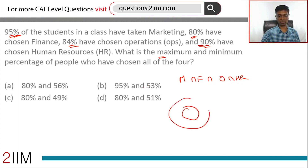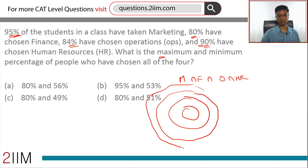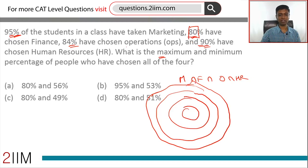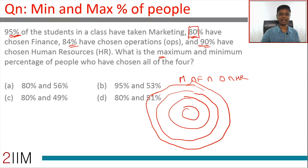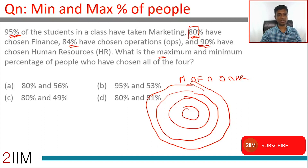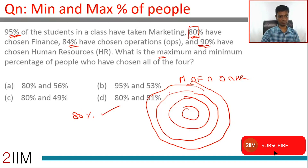If the smallest set is a subset of the slightly bigger one, which is a subset of the one bigger than that, and so on — then the maximum would be the smallest set, which is 80%. So M ∩ F ∩ OPS ∩ HR cannot be more than 80%, and 80% is achieved when each set is a subset of the next larger one. The maximum percentage is 80%.